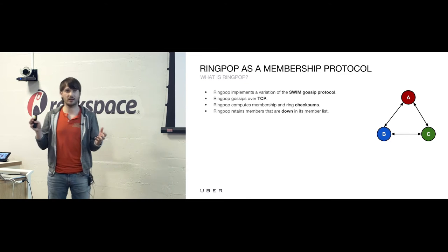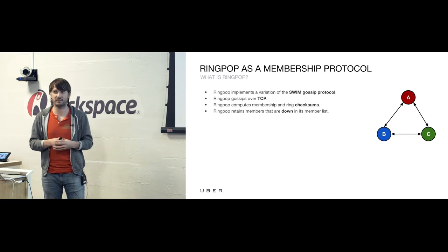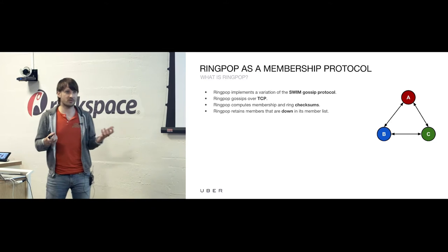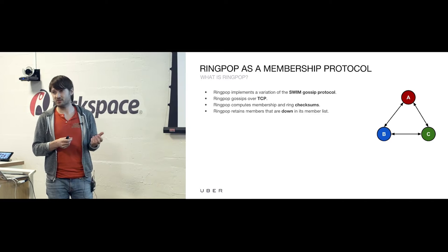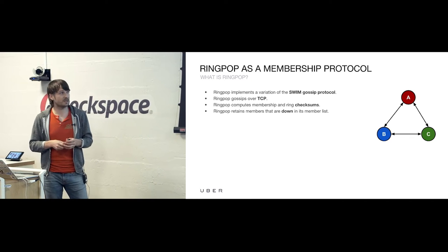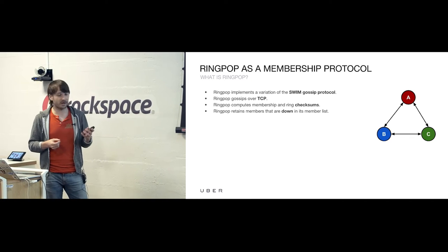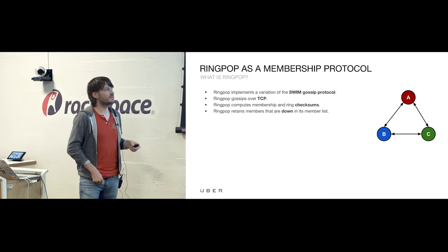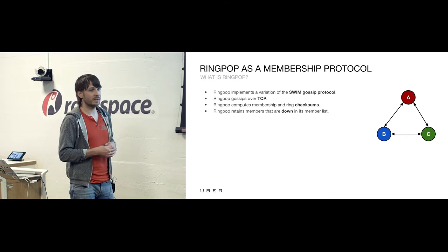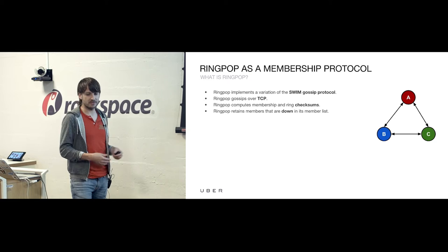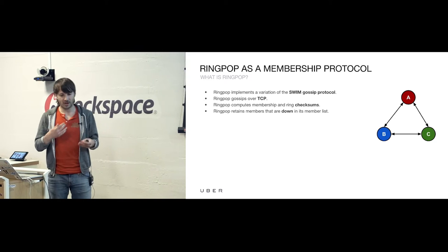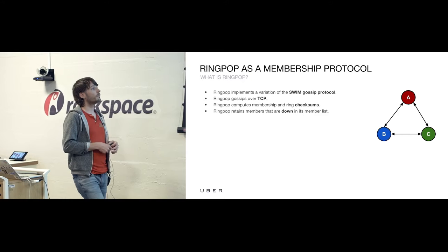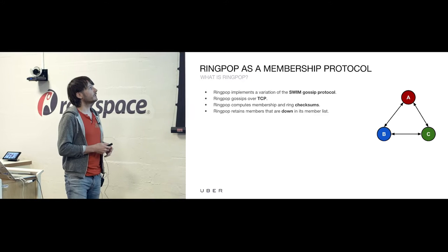This is all in a white paper that is freely available online and is an easy read. One of the benefits of implementing SWIM is that it's super easy to understand and doesn't require a lot of code. The fault detection is simple: B tries to ping C, C is not there — and then some sub-protocol is initiated, which I'll get into in a bit.